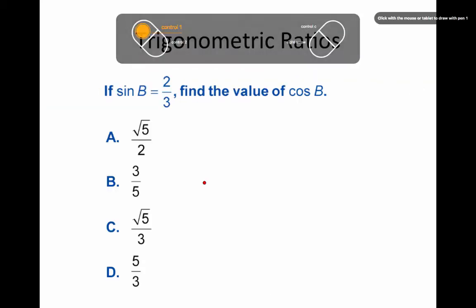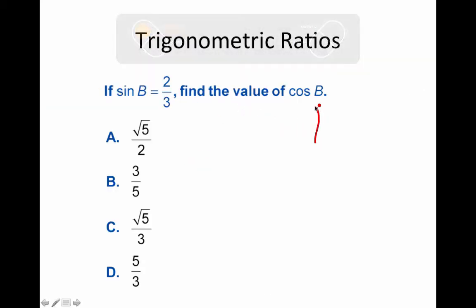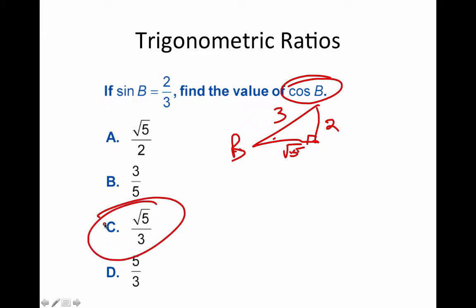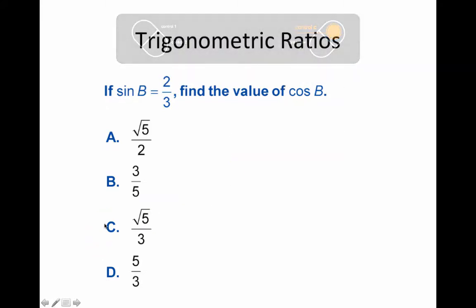If the sine of B is 2/3, draw a triangle and label B. SOH: opposite = 2, hypotenuse = 3. Use the Pythagorean theorem: 3² − 2² gives the adjacent side = √5. Then cosine of B = adjacent/hypotenuse = √5/3. Draw a picture — once you know two sides, you can find the third.